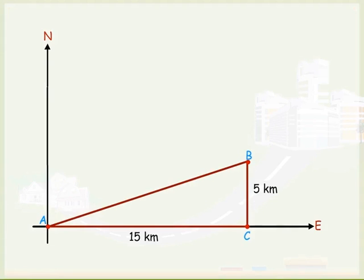Of course, this situation can be represented graphically as shown. Then using Pythagoras theorem, we can calculate this distance AB to be equal to 5 square root 10 kilometers.